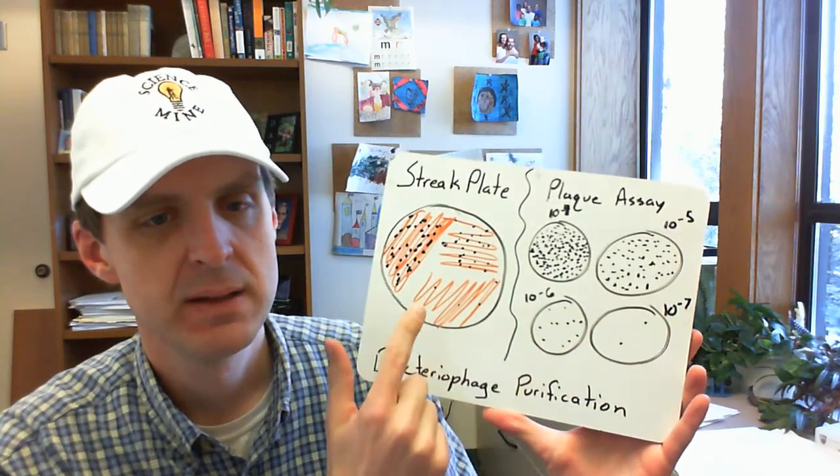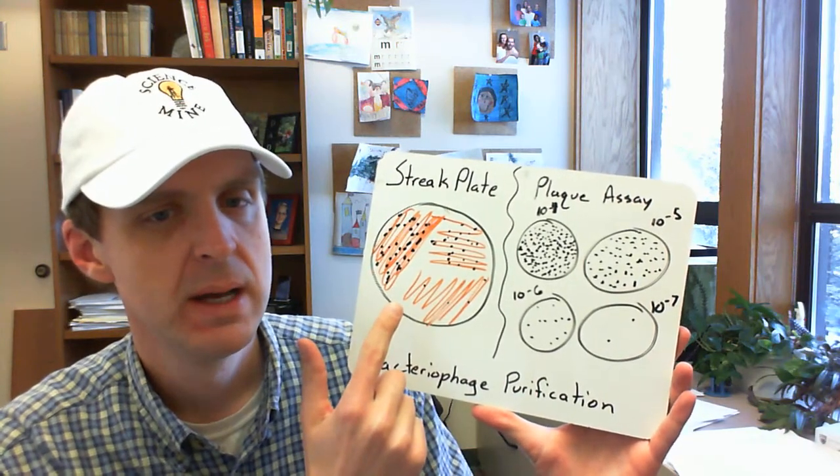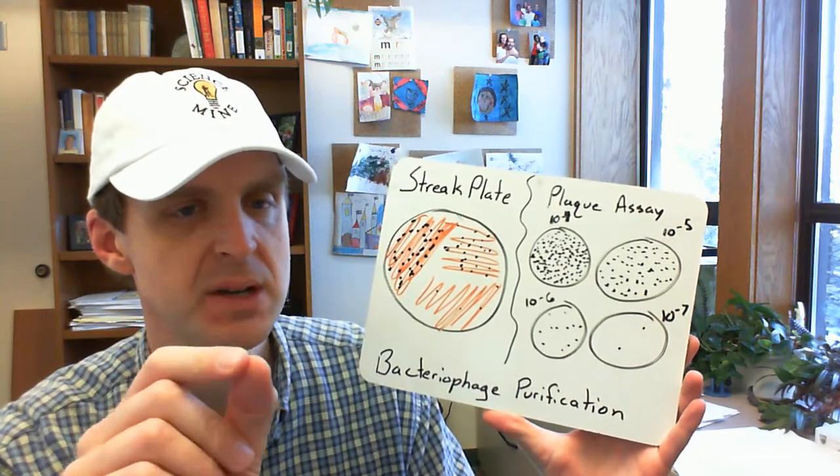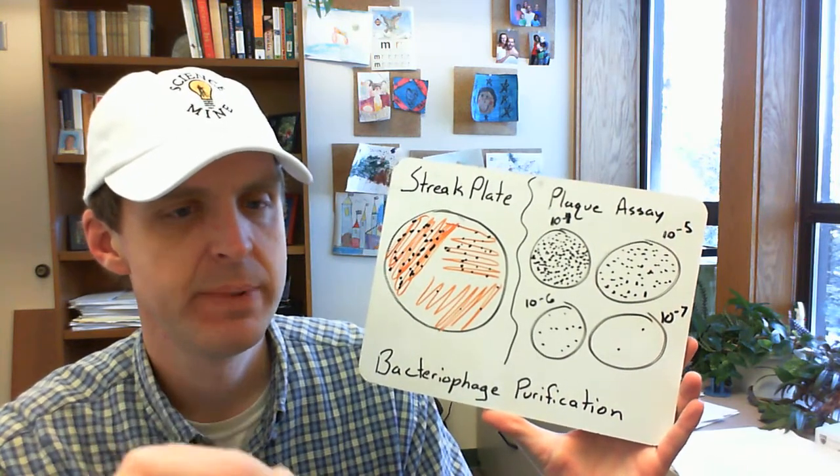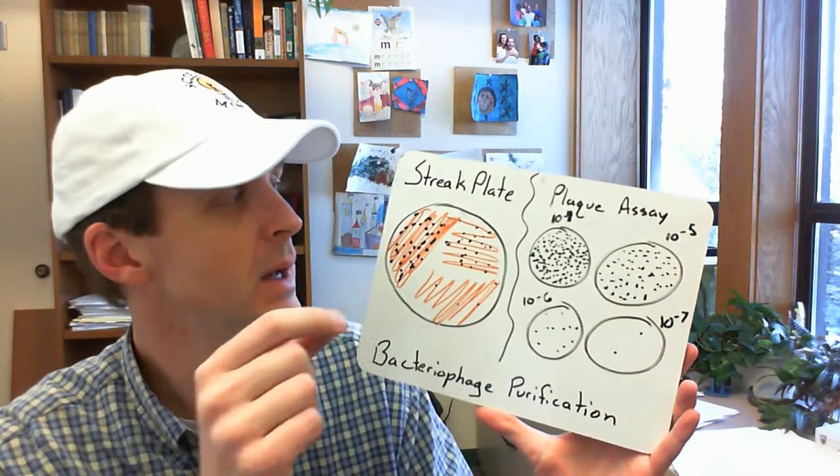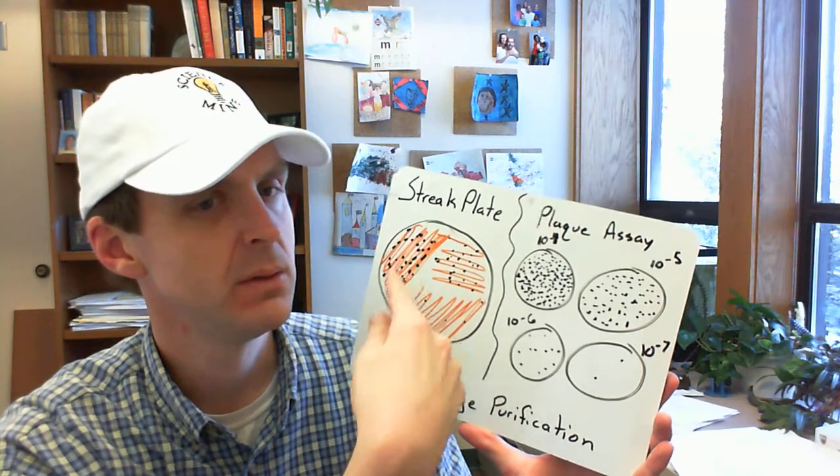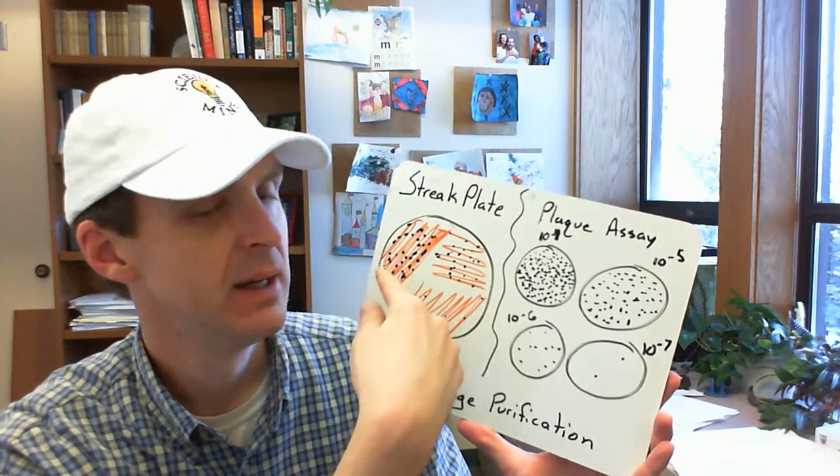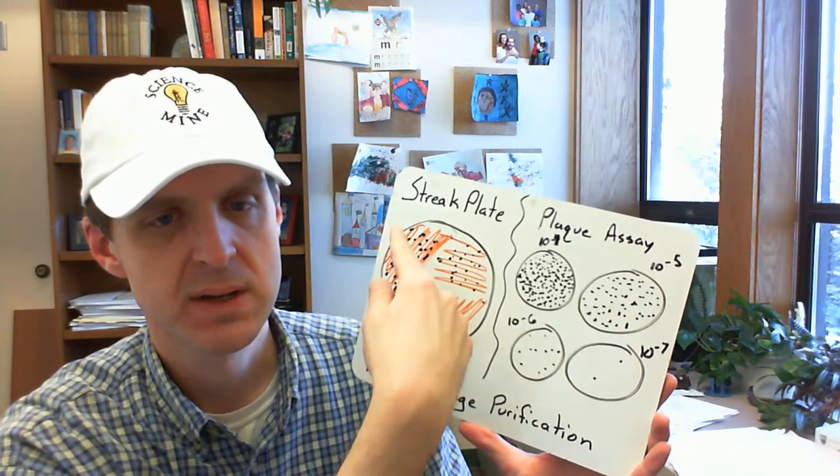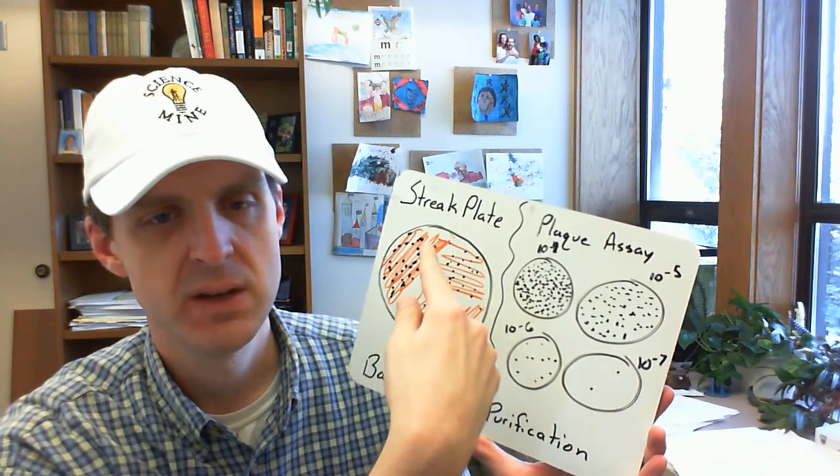On the left what you do is you start out with bottom agar and you take a pipette tip, touch it to a plaque or dip it in your phage buffer that contains virus, and then you start dragging the tip of the needle ever so lightly against the surface of the bottom agar.